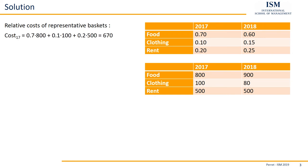This gives us for 2017 a relative cost of 670. Now we do the same thing for 2018: the shares 0.6 times price 900, plus for clothing 0.15 times 80, plus 0.25 times 500 — giving us for 2018 a relative cost of 677.